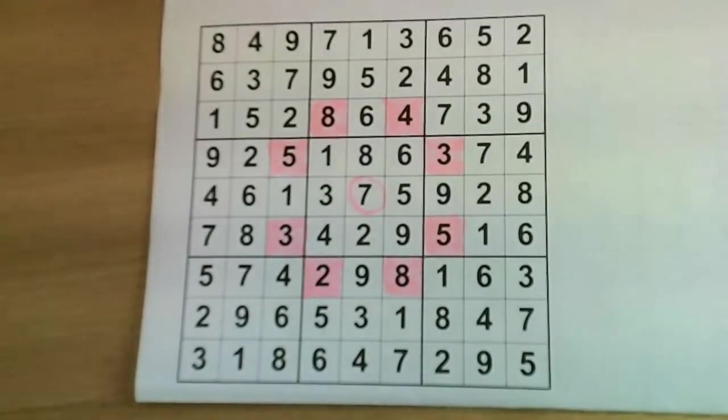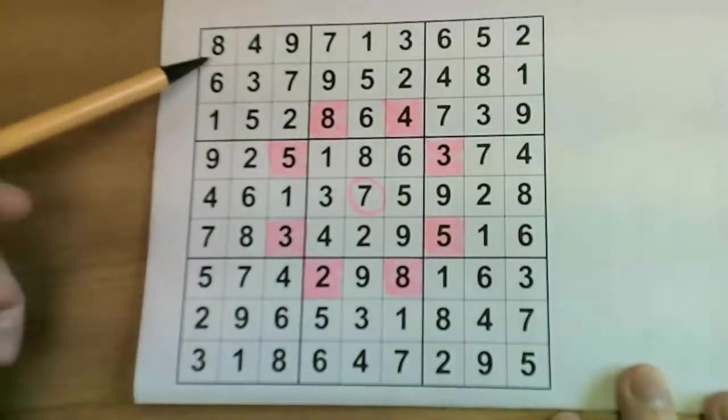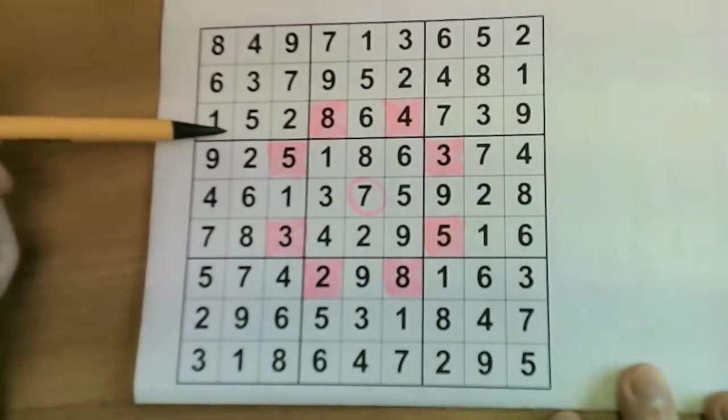So the main rule is reassuringly familiar from standard Sudoku. You must place the numbers 1 to 9 in each row, in each column, and in each box.